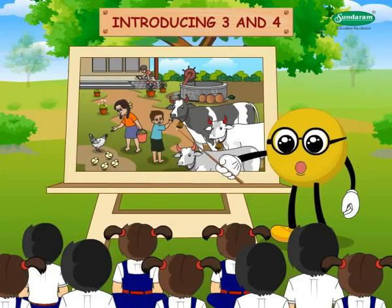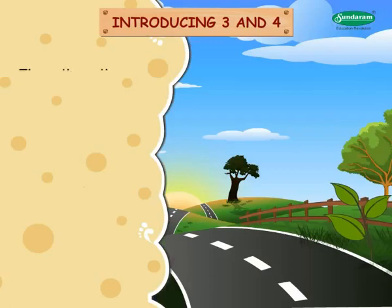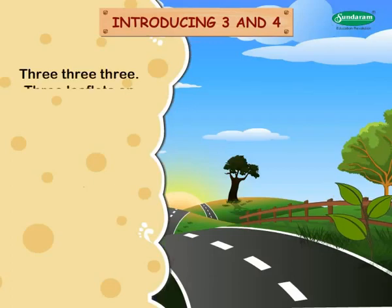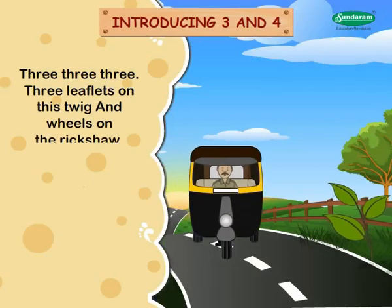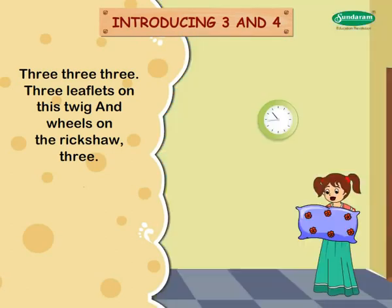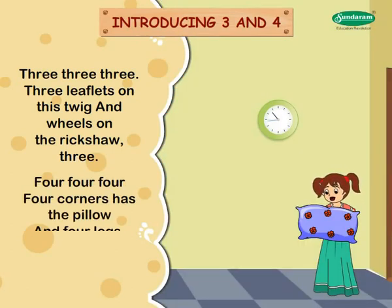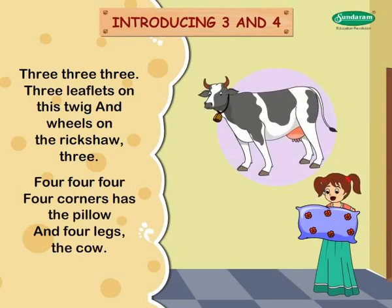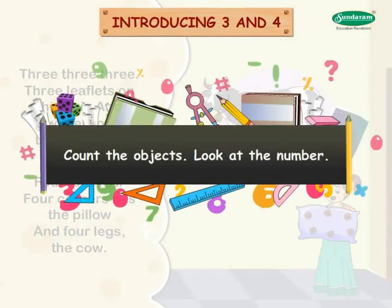Let us now sing a number jingle for three and four. Three three three — three leaflets on this twig, and wheels on the rickshaw three. Four four four — four corners has the pillow, and four legs the cow.